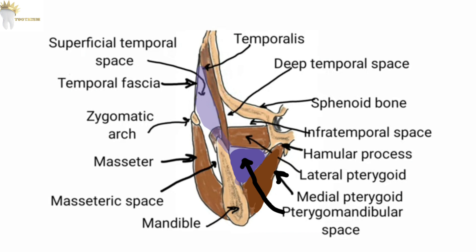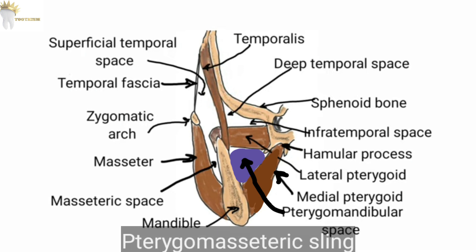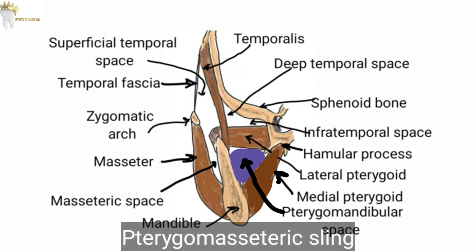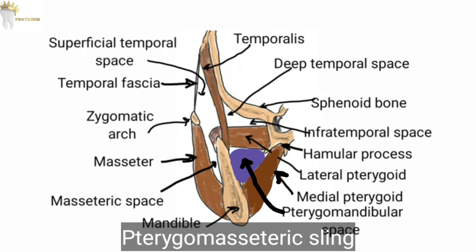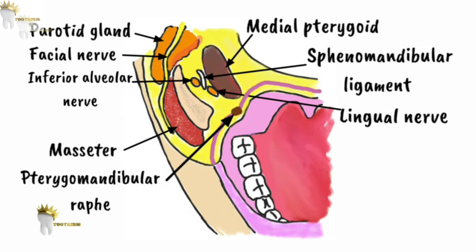Now let's understand the boundaries of this space. Laterally there is the medial surface of the mandible, and medially there is the medial pterygoid muscle. Inferiorly there is the pterygomassetericsling, which is formed by the medial pterygoid and masseter muscles. Superiorly we have the lateral pterygoid muscle.